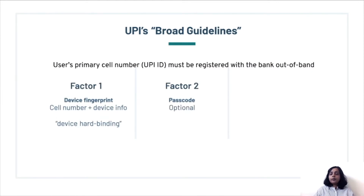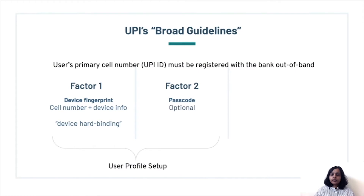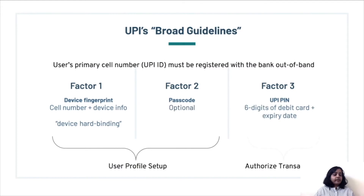The UPI guidelines talk about three factors of authentication. The first factor is called the device fingerprint, which is an association between the cell number and the device information. This association on the server side is called device hardbinding. The second factor is a passcode, which is optional. The first two factors are used for user profile setup. The third factor is a UPI PIN, which is used to authorize transactions.